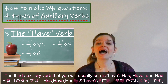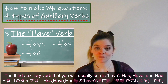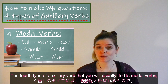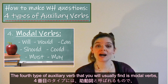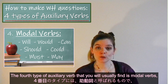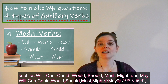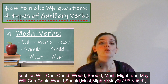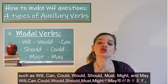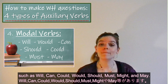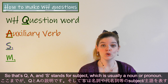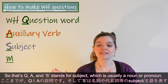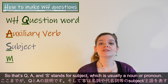The third auxiliary verb you will usually see is have: has, have, or had. The fourth type of auxiliary verb is modal verbs, such as will, can, could, would, should, must, might, and may.